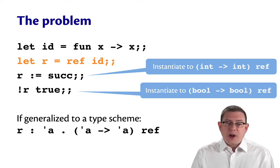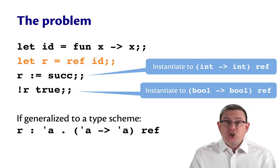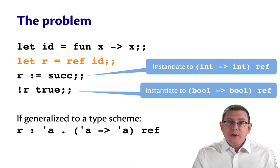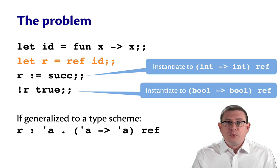At the point at which r is dereferenced and applied to true here during type inference, we'll again instantiate that type scheme. But this time we'll instantiate it and figure out that it needs to be a bool arrow bool ref because it's being applied to a bool. Oh, something bad just happened though. If the successor function is stored in r and we dereference r and get that successor function out, it's a function that expects an int as input. But we just applied it to true, which is a bool.